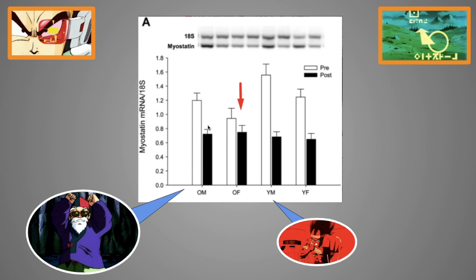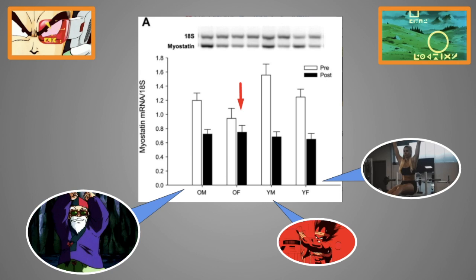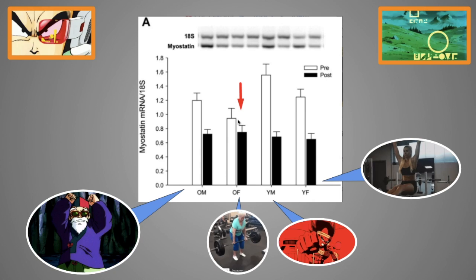Young men have the biggest drop in myostatin after training, which is why young men put on muscle so fast. Young women—decent drop, but old women struggle to lower myostatin, which is why they struggle to put on muscle mass.